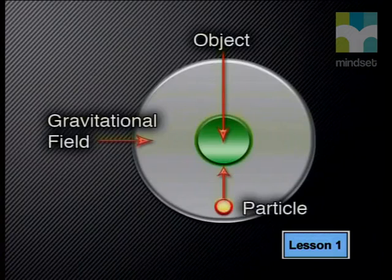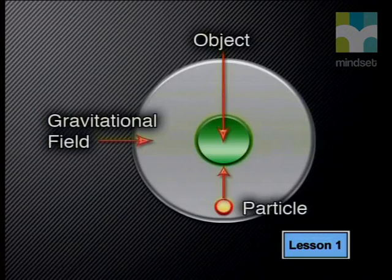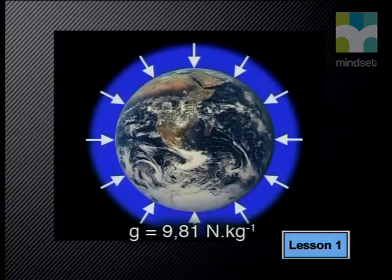Basically, the idea is that an invisible force field surrounds all material objects — everything that has mass — and that this force field attracts other objects. We call the region around an object in which a particle or other object experiences an attractive force towards it due to its mass, the object's gravitational field. The gravitational field of an object pulls other particles or objects towards its center of mass, so the Earth's gravitational field pulls things down towards the center of the Earth.